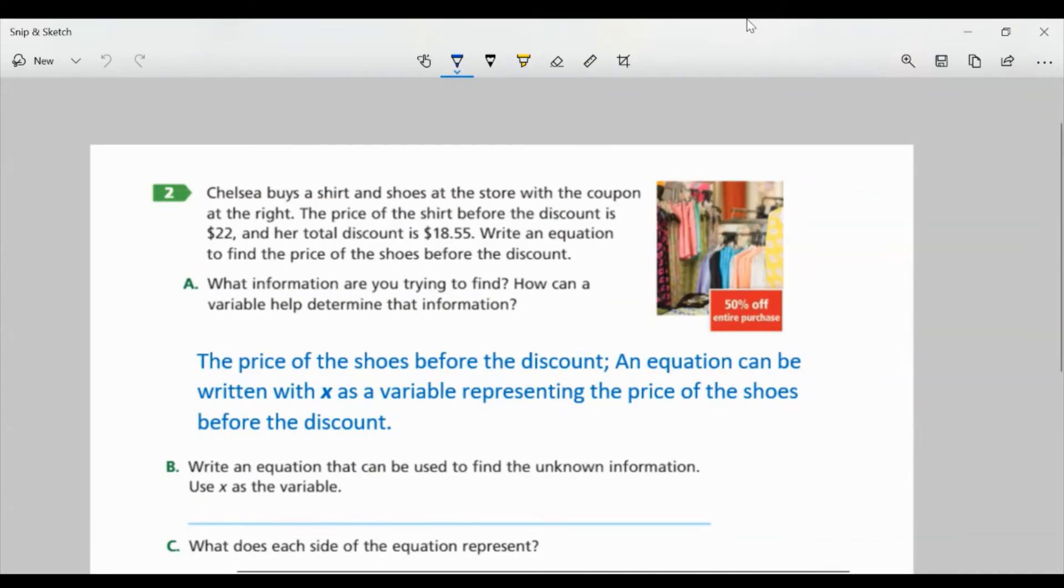So let's look at task 2 on page 239. Chelsea buys a shirt and shoes at the store with the coupon at the right. The price of the shirt before the discount is $22. And her total discount is $18.55. Write an equation to find the price of the shoes before the discount. So if you notice, it is 50% off the entire purchase. That's the discount.